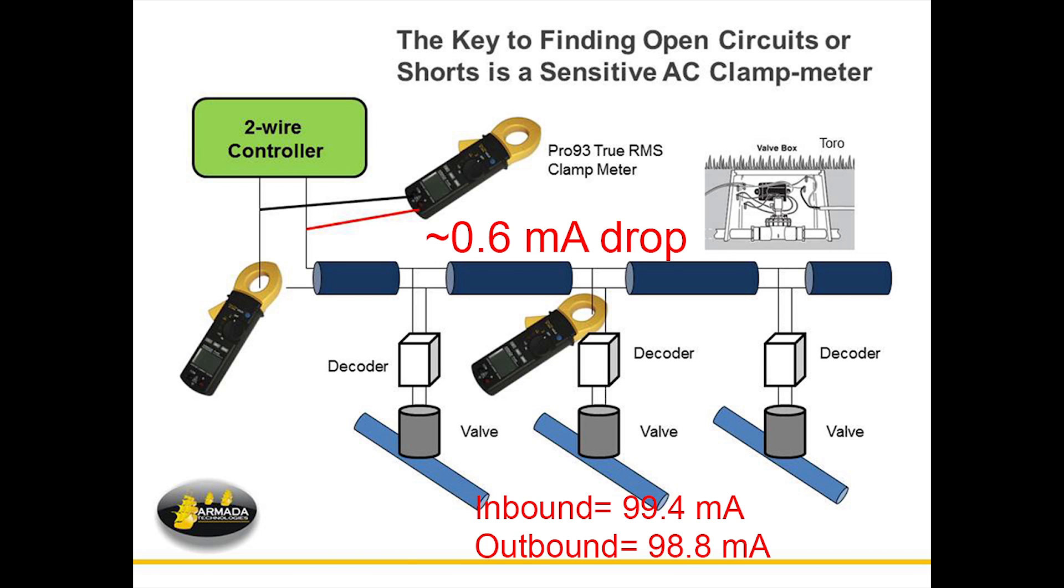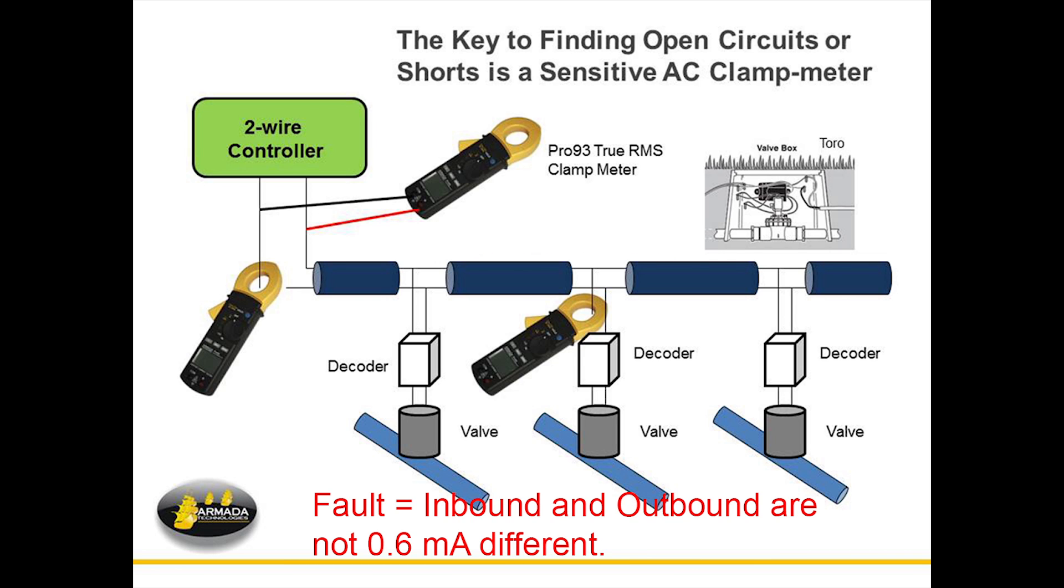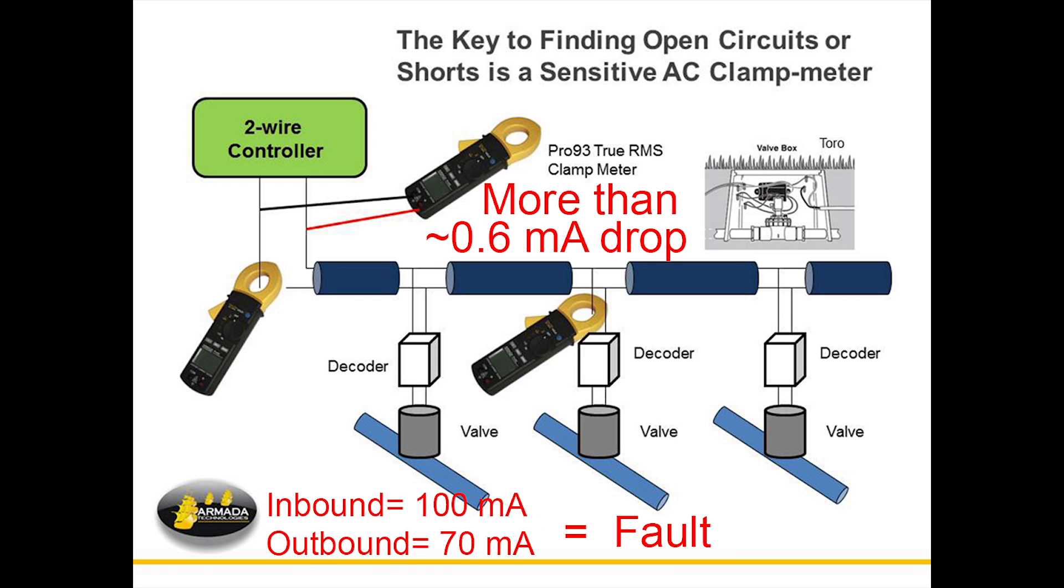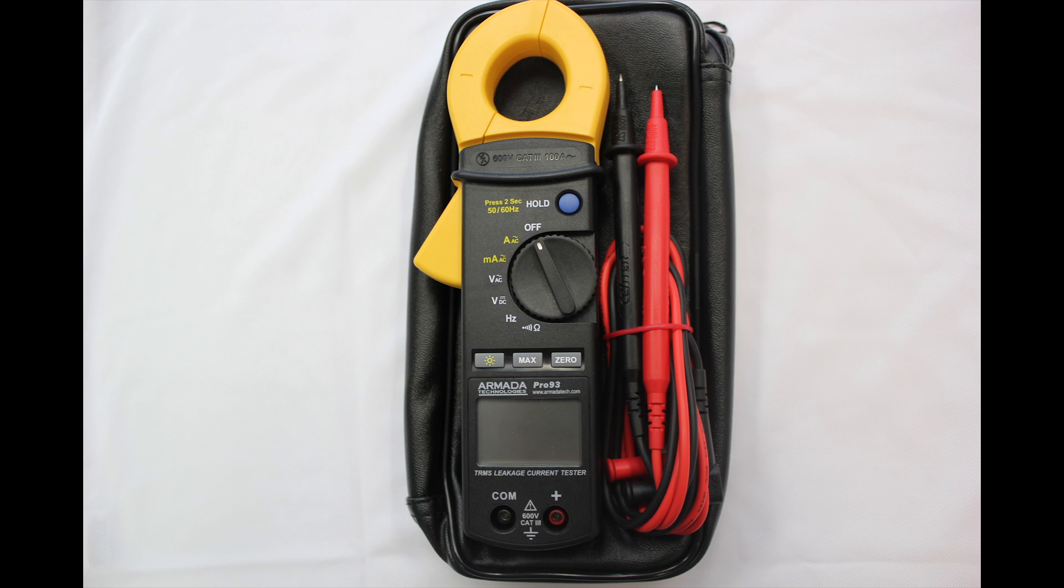You know you have a fault when you get to a decoder where the inbound and outbound are not 0.6 milliamps difference. If you drop by 30 milliamps across a decoder, you know that decoder is bad. That's the beauty of these meters. But the only way you can do that is if you have a clamp that can measure milliamps, and that's what the Pro93 can do.